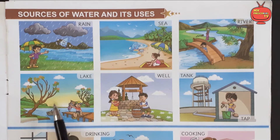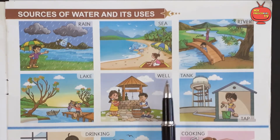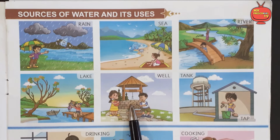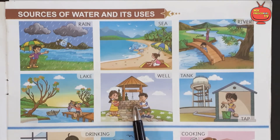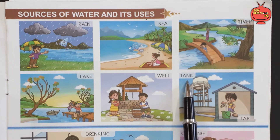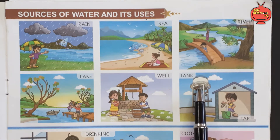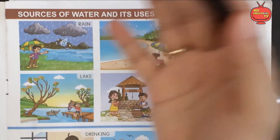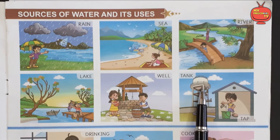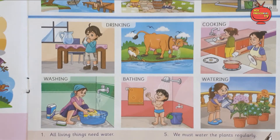Lake — we also get water from the lake. Well — well is also a source of water. Tank — we can store water in tanks and then we can use water whenever we need it. So tank is also a source of water.